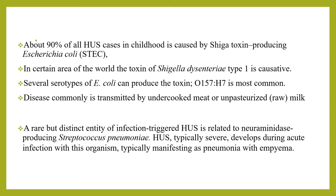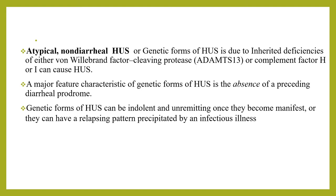A rare but distinct entity of infectious-triggered HUS is related to neuraminidase-producing Streptococcus pneumoniae. HUS typically is severe and develops during acute infection with this organism, typically manifesting as pneumonia with empyema. In atypical or non-diarrheal HUS, or genetic forms of HUS, this is due to inherited deficiency of von Willebrand factor-cleaving protease ADAMTS13, or complement factor H or I. A major characteristic of genetic forms of HUS is the absence of a preceding diarrheal prodrome. Genetic forms of HUS can be indolent and remitting once manifest, or they can have a relapsing pattern precipitated by infectious illness.